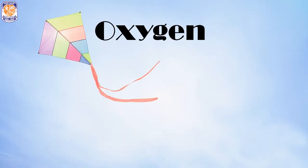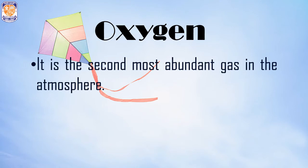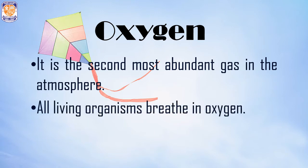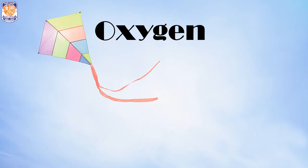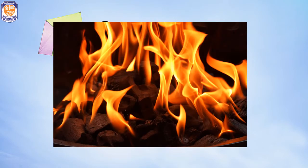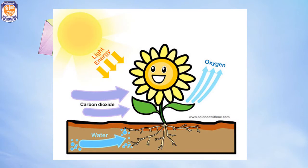Moving on to the second most abundant gas in our atmosphere — oxygen. The amount of oxygen present is 21%. All living organisms, including human beings, plants, animals, fish, and insects, breathe in oxygen to survive. Oxygen is required not just for burning food in our bodies, but also for burning any substance.